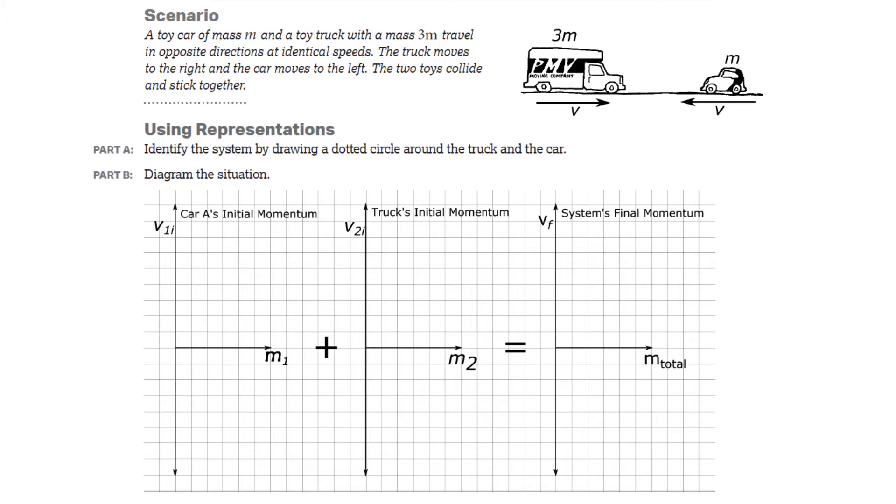Let's go through it. Part A. Identify the system by drawing a dotted circle around the truck and the car. Here you go. The system is both the truck and the car, meaning the momentum is going to be conserved. If it was just the car or just the truck, then the changes in momentum are going to be seen as an external impulse. But thankfully, it's both the truck and the car, so the momentum is conserved.